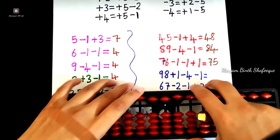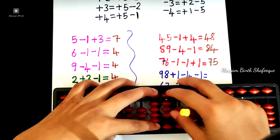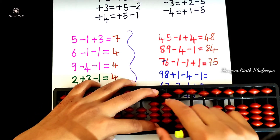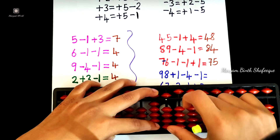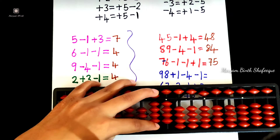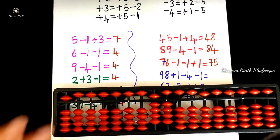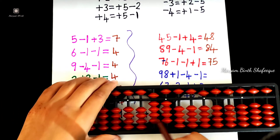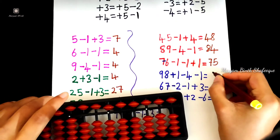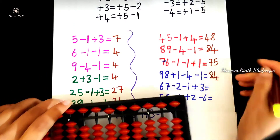98 plus 1, minus 4, minus 1. Minus 1 equals plus 4, minus 5. Now 84 is equal to plus 4.